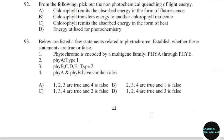92nd question: From the following, pick out the non-photochemical quenching of light energy. Correct answer: Option C — Chlorophyll remits the absorbed energy in the form of heat.